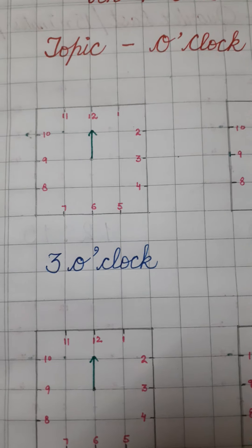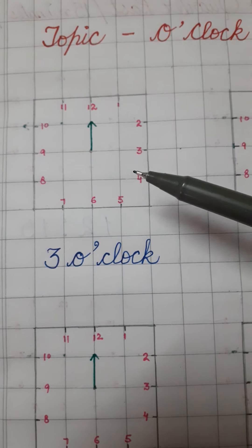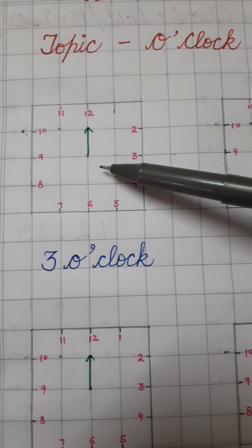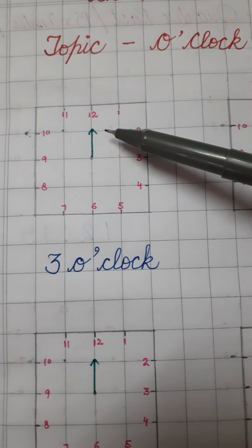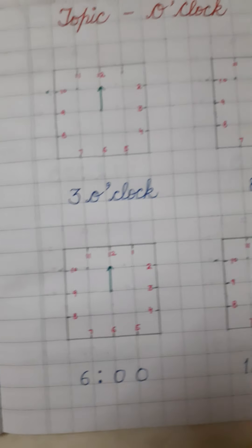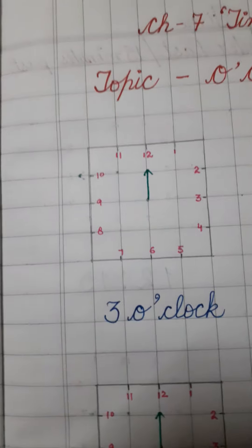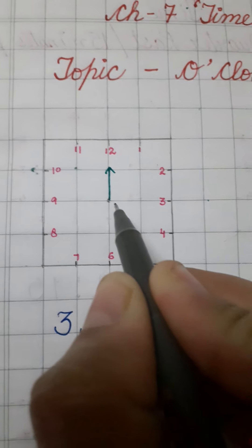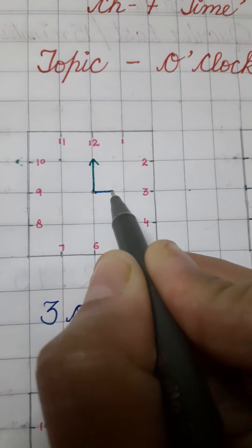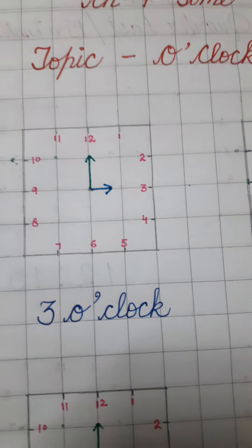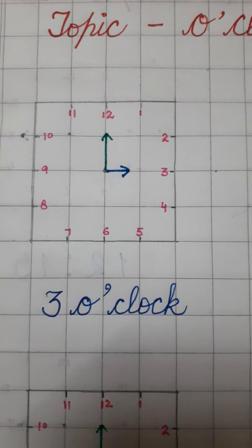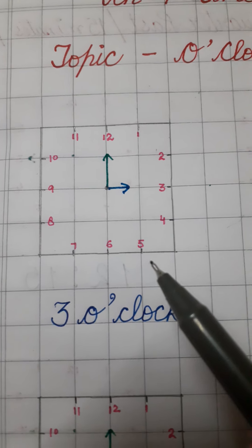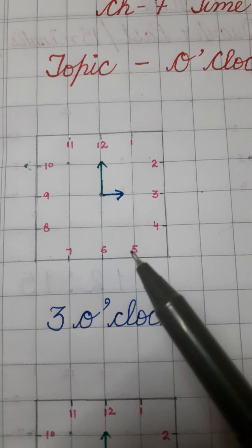Okay, first of all, in the first clock, you have to show 3 o'clock. I have already shown the long hand on the 12. Now, I have to show 3 o'clock. So, I have to draw a short hand. और short hand किस पे जाएगा? हमारा 3 पे जाएगा. So, I will draw a short hand towards the 3. Can you see it? Yes. Now, how do we read it? It's 3 o'clock.